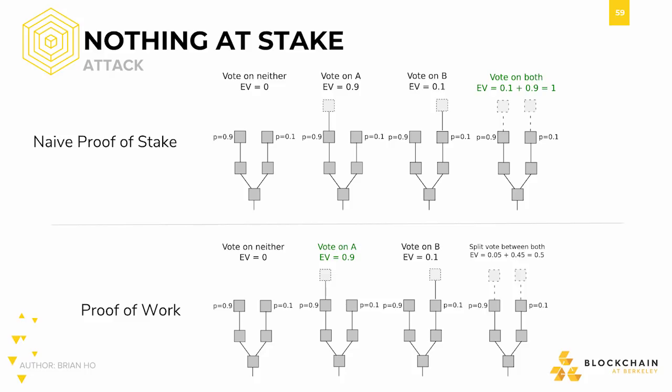But what happens in proof-of-stake under these same circumstances? Fork A again has a 90% chance of success, and fork B a 10% chance. Voting exclusively on fork A has a 0.9 expected return, and exclusively on fork B a 0.1 expected return. But what about voting on both? There's no physical restriction stopping someone from putting their signature on the next block of each fork. By voting on each block, the voter is able to maximize their expected return value. One of the forks must beat the other — this is a guarantee. Why not vote on all forks so that you win no matter which fork succeeds? This leads to an expected value of voting on both forks of one, making it the clear choice for any rational actor.